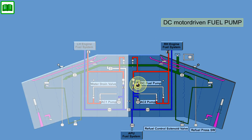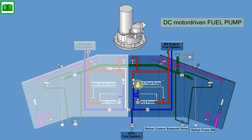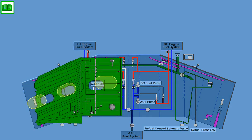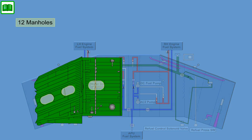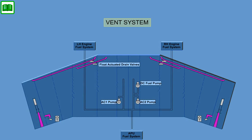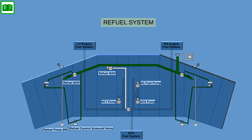There is a DC motor-driven fuel pump inside the right-hand tank. Access to the wing tanks and surge tank is possible through 12 manholes underneath the aircraft wing. A vent system is incorporated in each tank, along with the necessary parts for automatic and manual refueling and defueling.